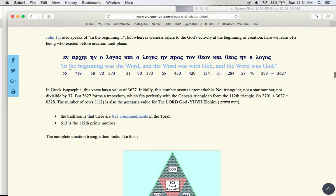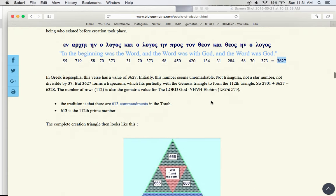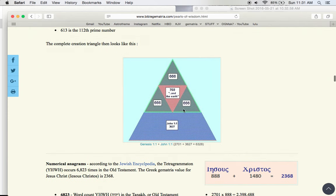And then we go into John 1:1. In the beginning was the Word, and the Word was with God, and the Word was God. God in the Greek is also numerical. 3627 is the sum of it. It doesn't equal a triangular number, but it just so happens to fit as a perfect trapezium number right under Genesis 1:1, in the beginning.